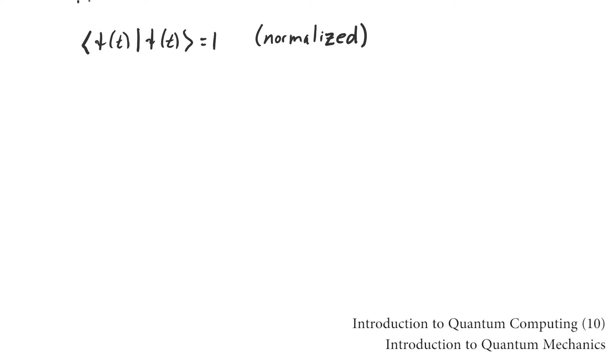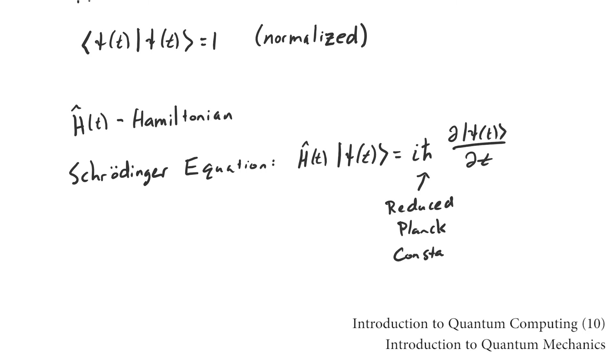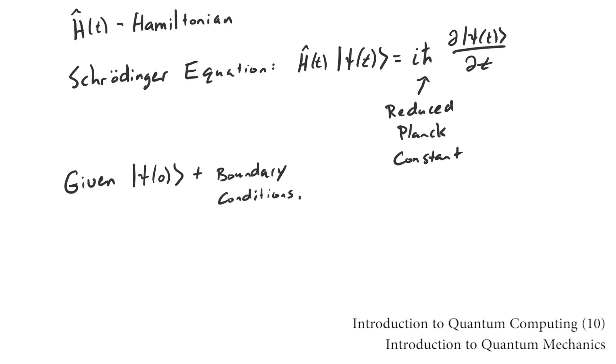The evolution of the state vector is driven by the Hamiltonian, a sibling of the force vector. The Schrödinger equation relates the state vector and the Hamiltonian, like Newton's second law does the position and the force. We solve it to find the state vector for all times.